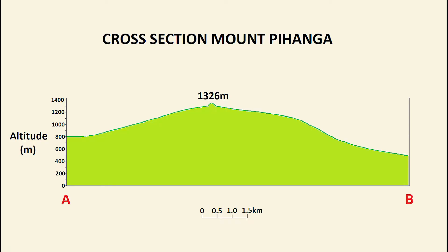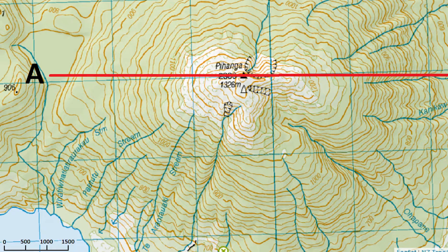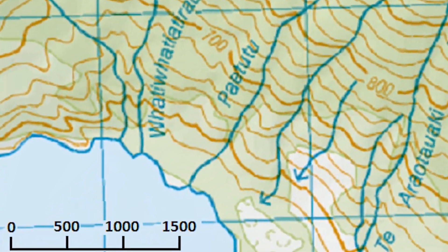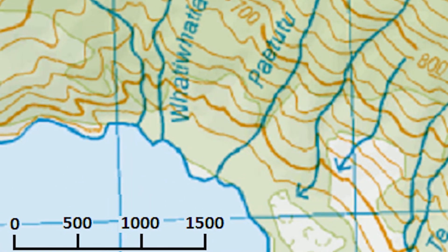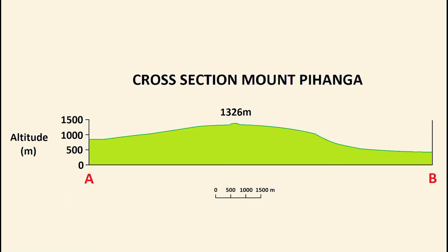Today, I'm going to show you how to calculate the vertical exaggeration of a cross-section graph. On cross-section graphs, the horizontal scale is taken from the scale of the topographic map that it was drawn from. However, when we draw a cross-section graph, the vertical scale is usually exaggerated relative to the horizontal scale. This is because if both axes were done to the same scale, the vertical scale on the y-axis would appear almost flat.